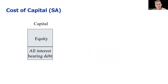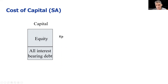Let's look at a situation in South Africa. We've got some equity and some debt here. I'm going to use some notation: I'm going to refer to the cost of equity — the required return by shareholders — as KE, and the cost of debt as KD. That's what the bondholders want, or the bank wants, whoever lent you the money.